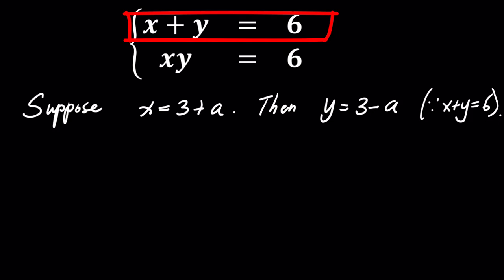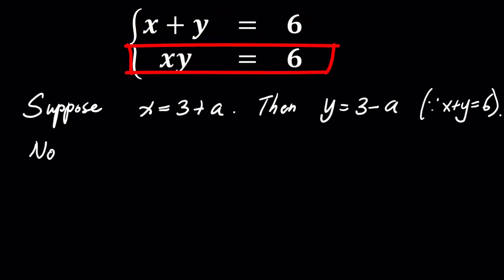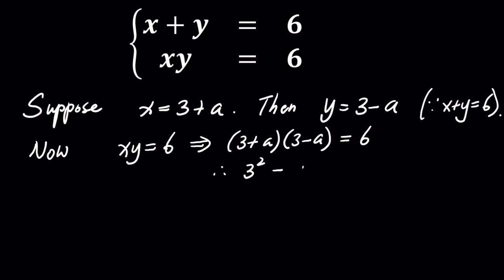Now, considering the second equation, xy equals 6, we find that multiplying the expressions for x and y gives us 3 plus a times 3 minus a equals 6. Expanding the left hand side of this equation, we use 9 minus a squared.